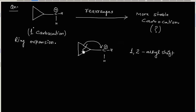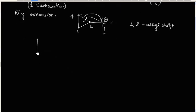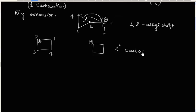We are breaking this carbon-carbon bond so that this carbon connects to the adjacent carbon. After breaking this bond, we now have a 4-membered ring. Carbon number 2 has lost a bond, so it will have a positive charge. Finally we will have this carbocation, which is a secondary (2°) carbocation with a 4-membered ring.